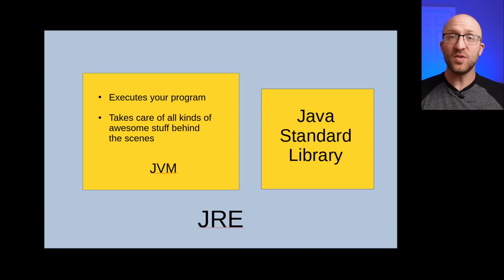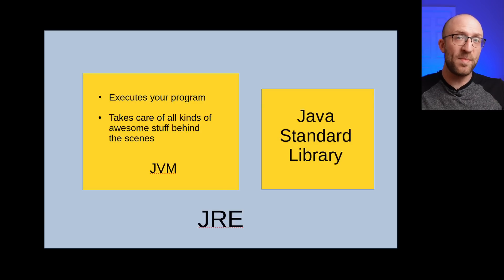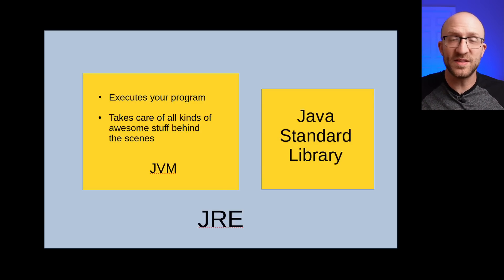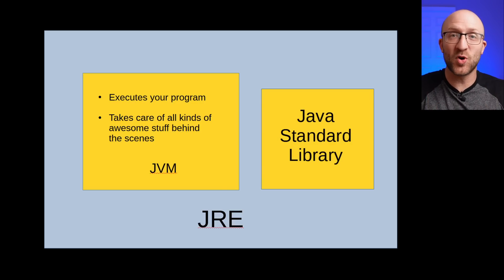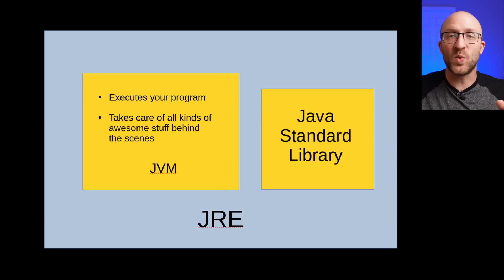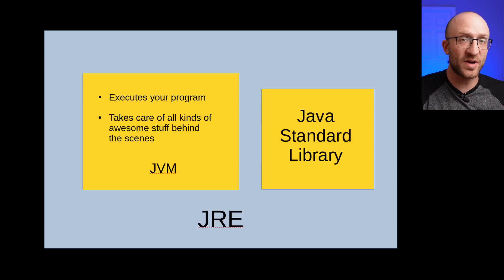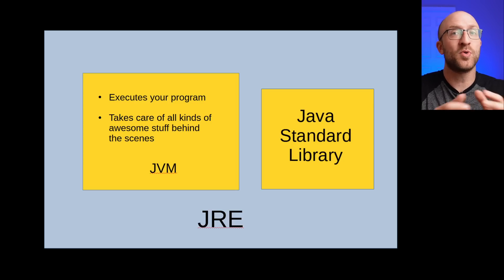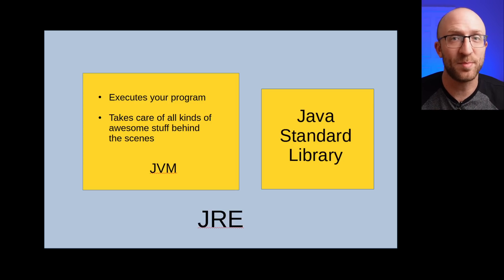So the JRE includes those two things: the JVM and the Java Standard Library. With those two things, the JRE can run any program that you give it. The JVM will take your Java program, marry it with all the classes and things from the Java Standard Library that it needs in order to do its job, and then it'll run your program.